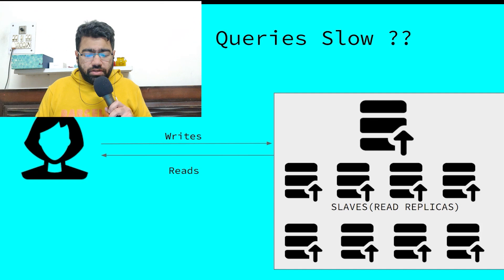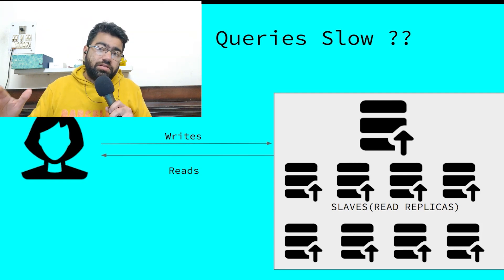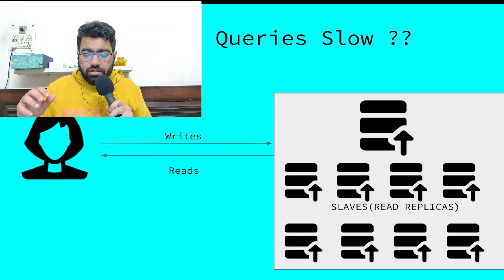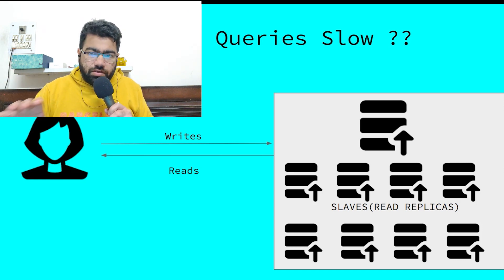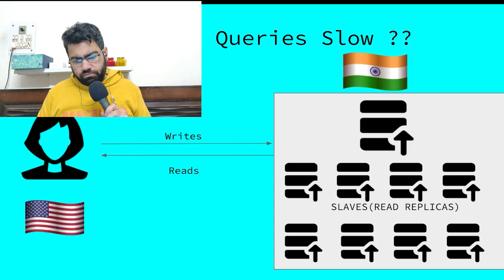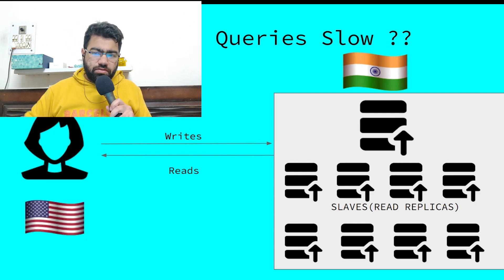It is possible that the number of requests coming to one read replica are too many, and you want to distribute those requests among multiple read replicas. So you can simply increase the number of read replicas. But suppose the issue is that your database is hosted in India and the person making the call is sitting in the US.